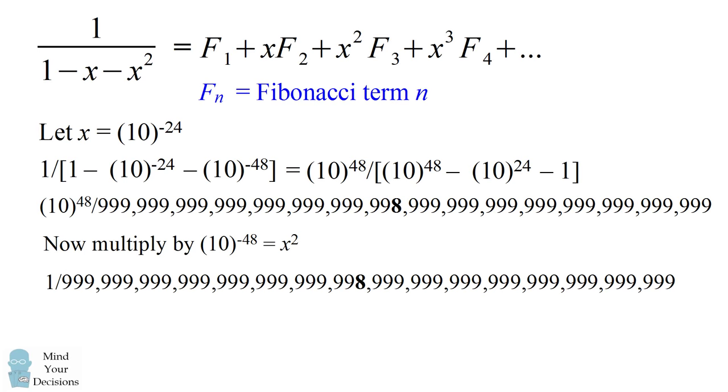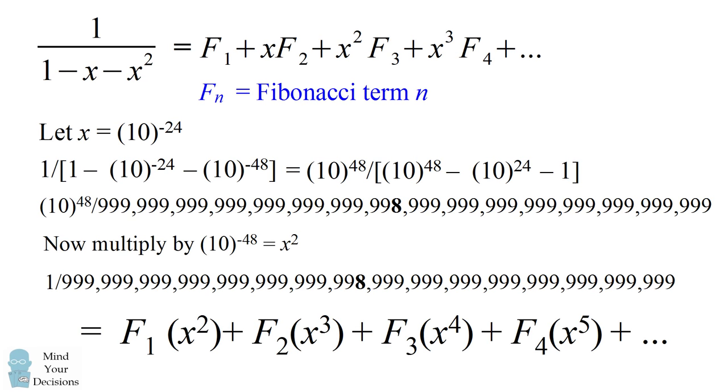So then we end up with the exact fraction that we started out with, that crazy fraction. And we know from what we just derived, this will be equal to this series of powers of x associated with Fibonacci numbers shifted over by 2 powers of x.